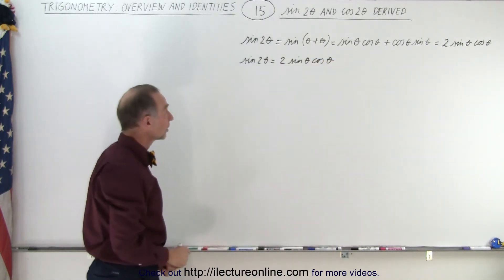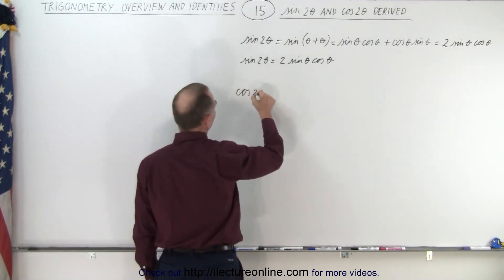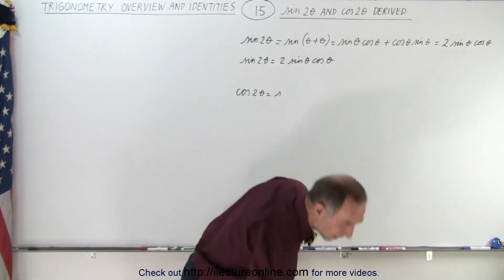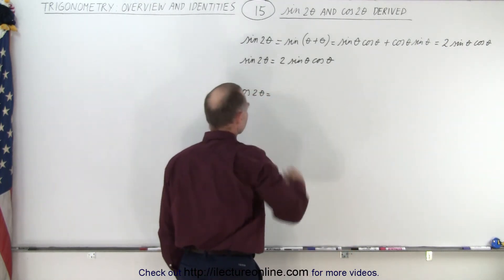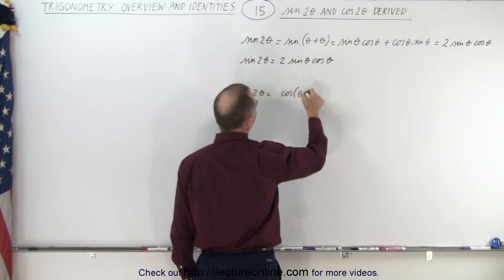How about the cosine of two theta? We use the same technique. The cosine of two theta is equal to the cosine of theta plus theta.